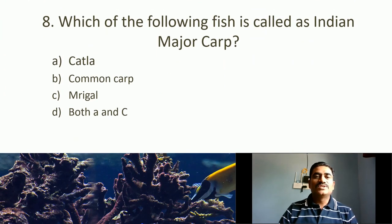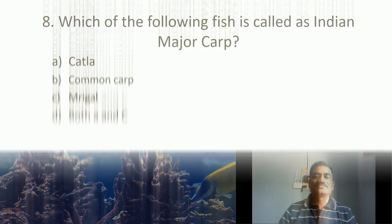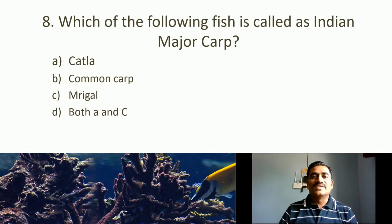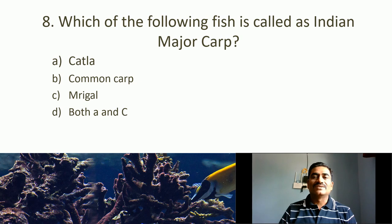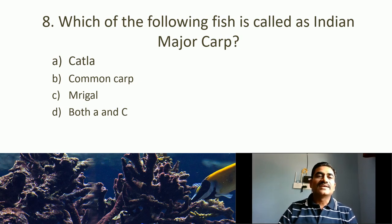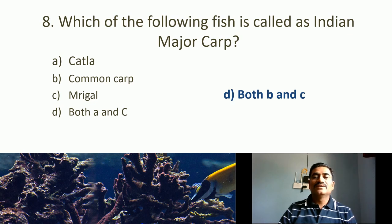Eighth MCQ: Which of the following fish is called Indian major carp? Indian major carps are carps of Indian origin with a higher growth rate. There are 3 Indian major carps: Catla, Rohu, and Mrigal. Options: Catla, common carp, Mrigal, both A and C. The right answer is both A and C — Catla and Mrigal — and Rohu are the Indian major carps.